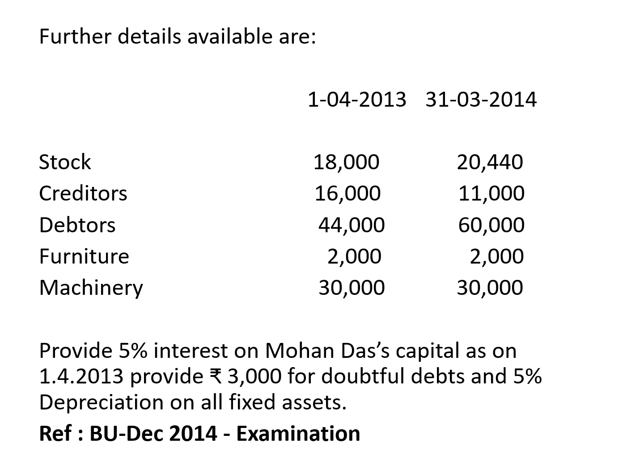Creditors: opening balance 16,000 and closing balance 11,000. Opening creditors go to the opening statement of affairs and creditors account; closing creditors go to creditors account and balance sheet. Debtors: opening balance 44,000, closing balance 60,000. Opening debtors go to the debtors account and opening statement of affairs; closing debtors go to the balance sheet.